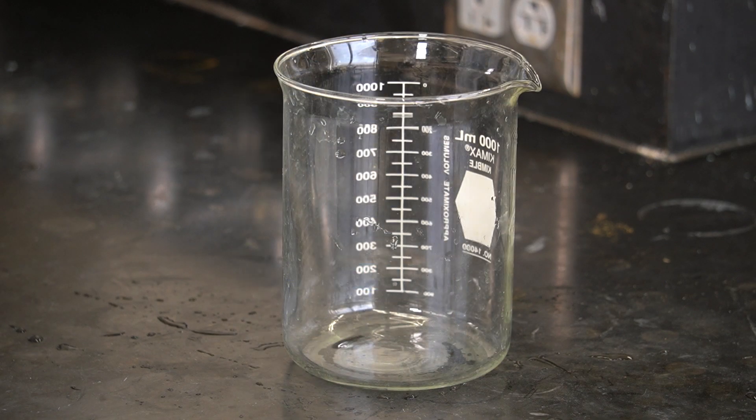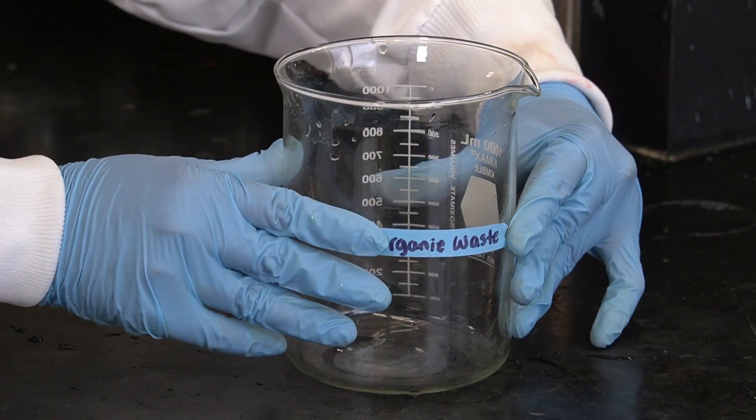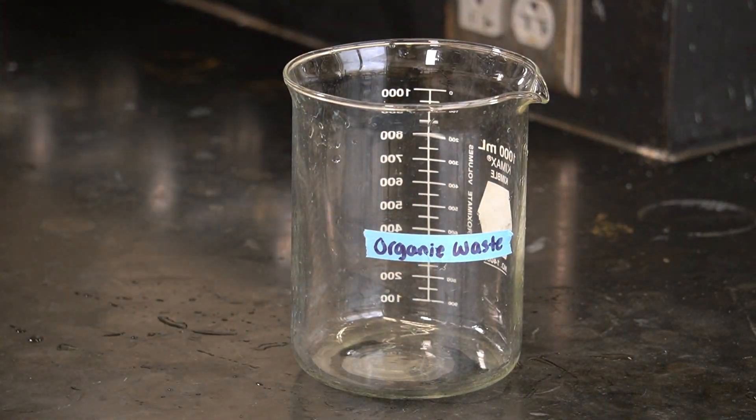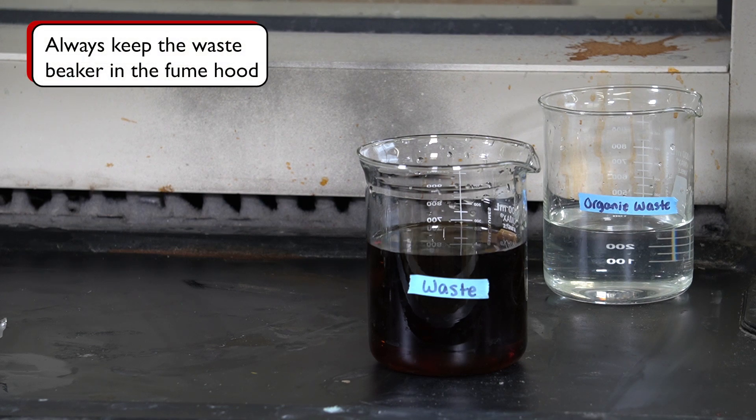However, if it is used for other types of waste, such as organic waste, we should mark it clearly as organic waste. In general, it is a good idea to label any container in the lab so we know exactly what it contains and can handle it properly. One note: we should always keep the waste beaker in the fume hood, especially when it contains organic solvents which can be volatile.